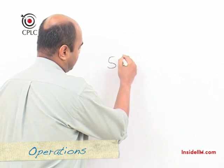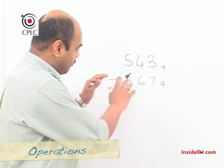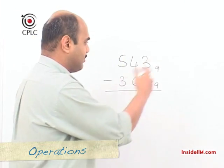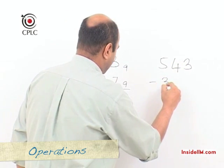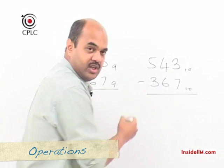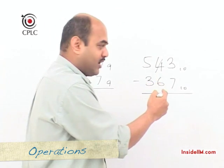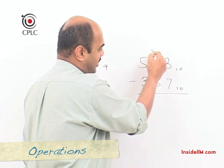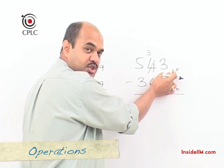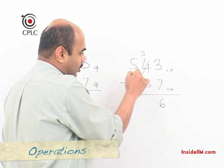Having looked at addition in a different base, we can also look at how to subtract two numbers not in the decimal system. For example, 543 minus 367, both in base 9. Before subtracting in base 9, let's look at the same numbers in base 10 since we are familiar with that. When we start with the units digit and need to subtract 7 from 3, we borrow from the previous digit. When we borrow, we are borrowing one base, and one base here is 10, so we add 10 to 3 to get 13, then subtract 7 to get 6.